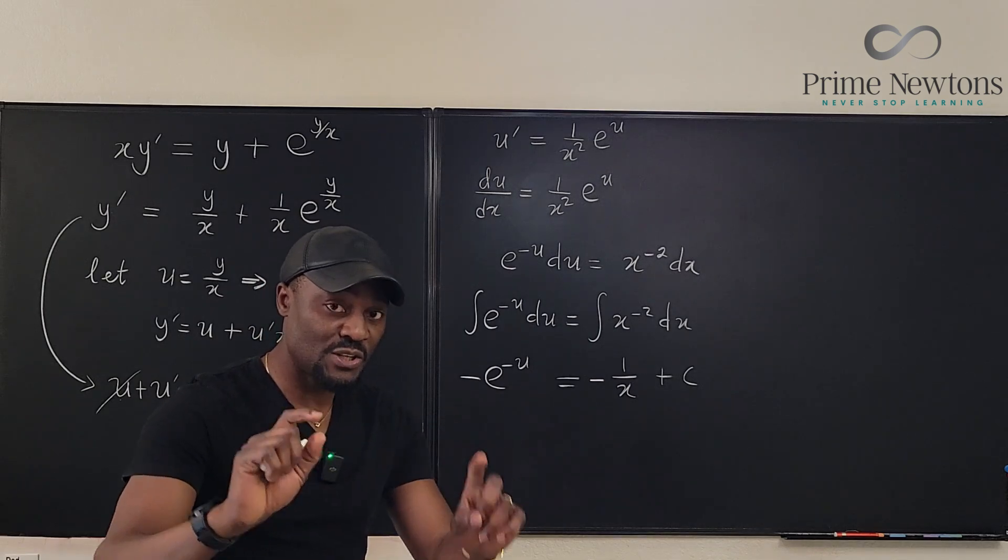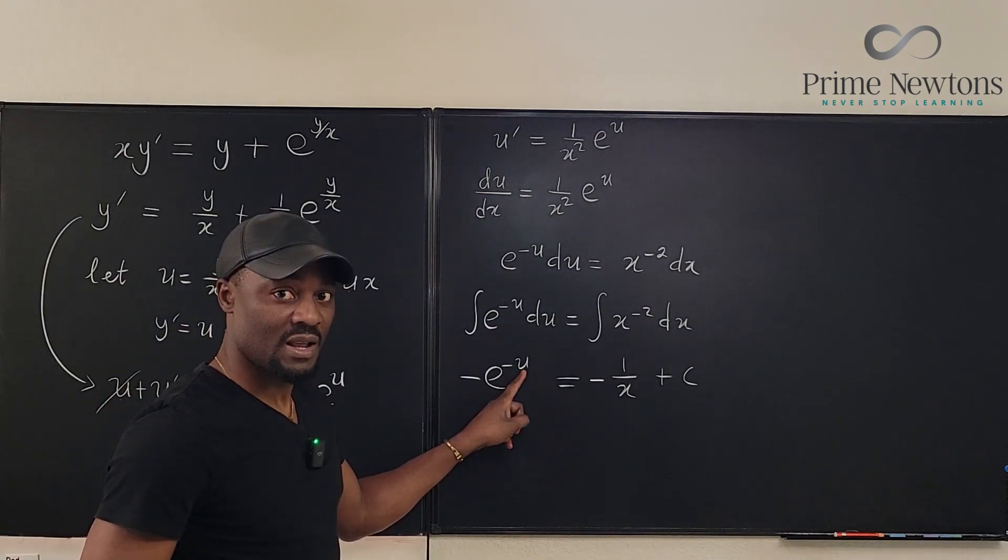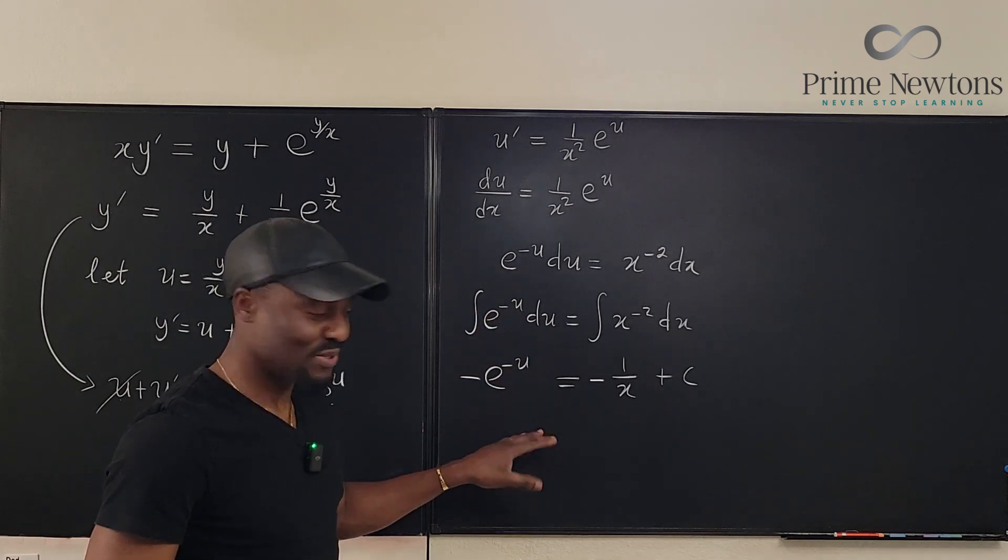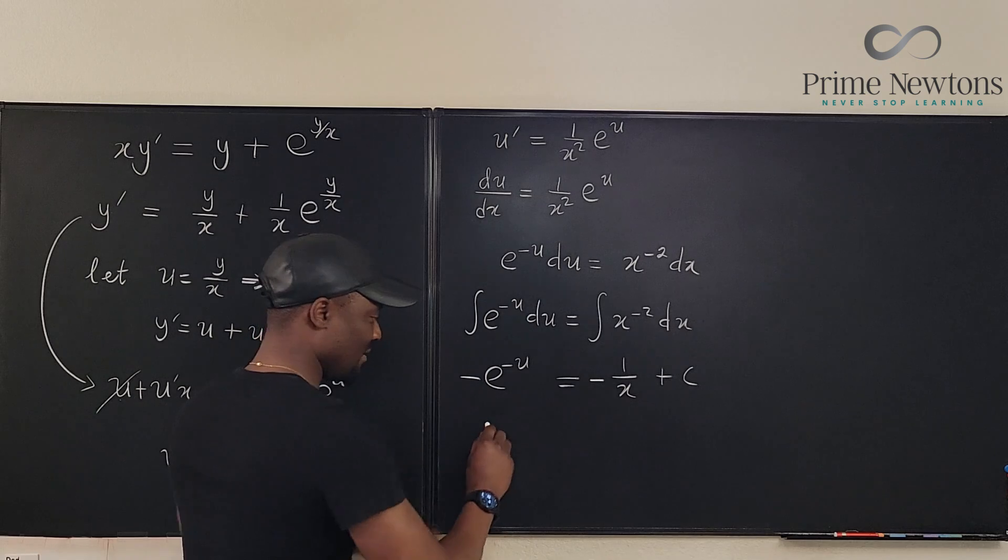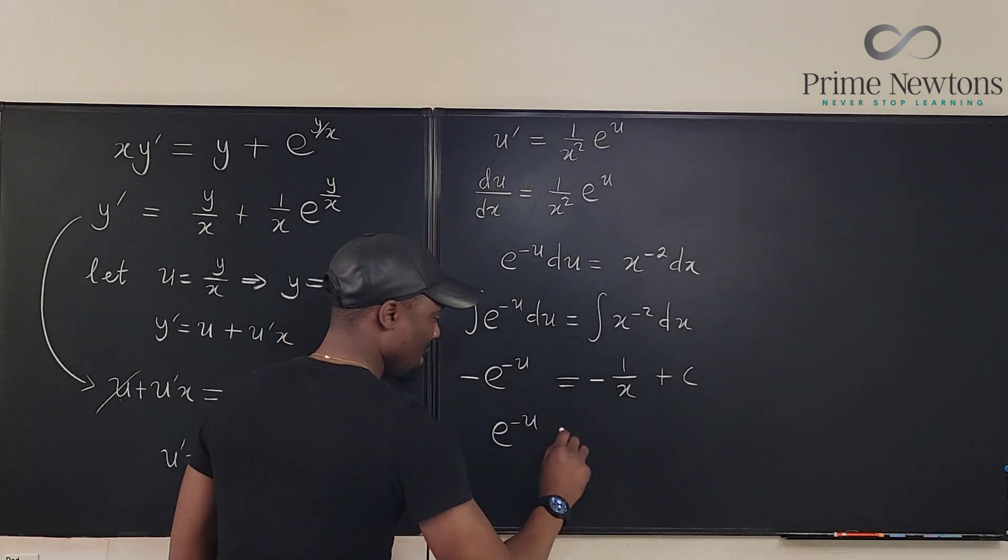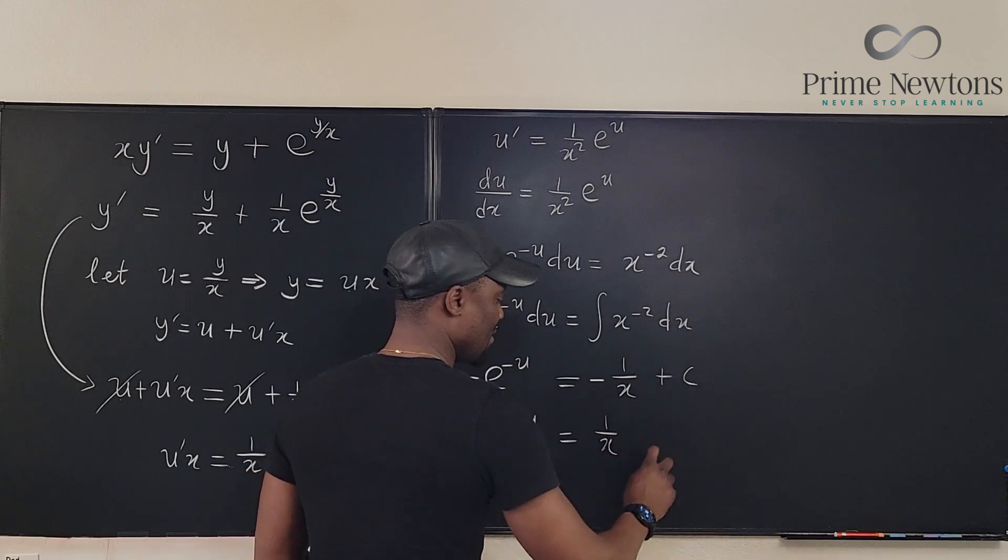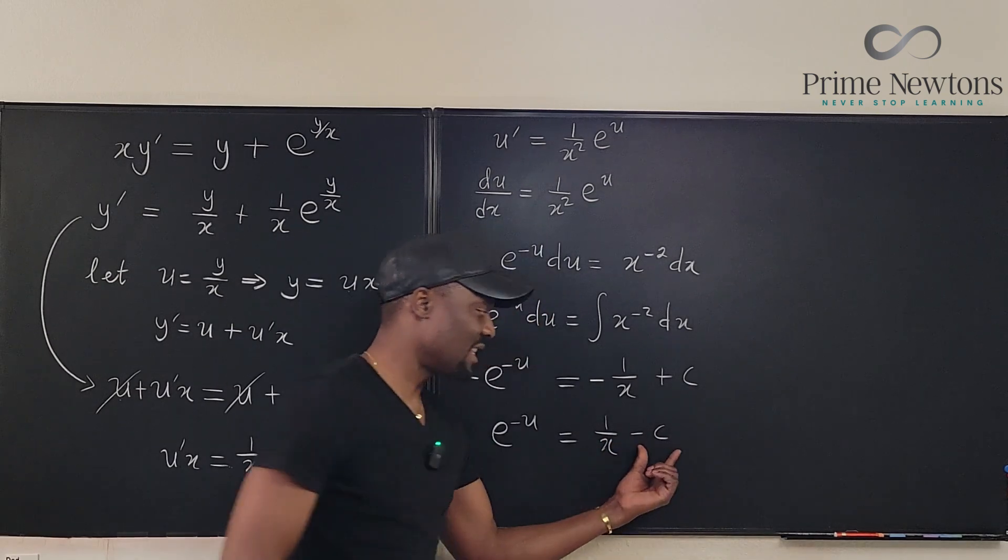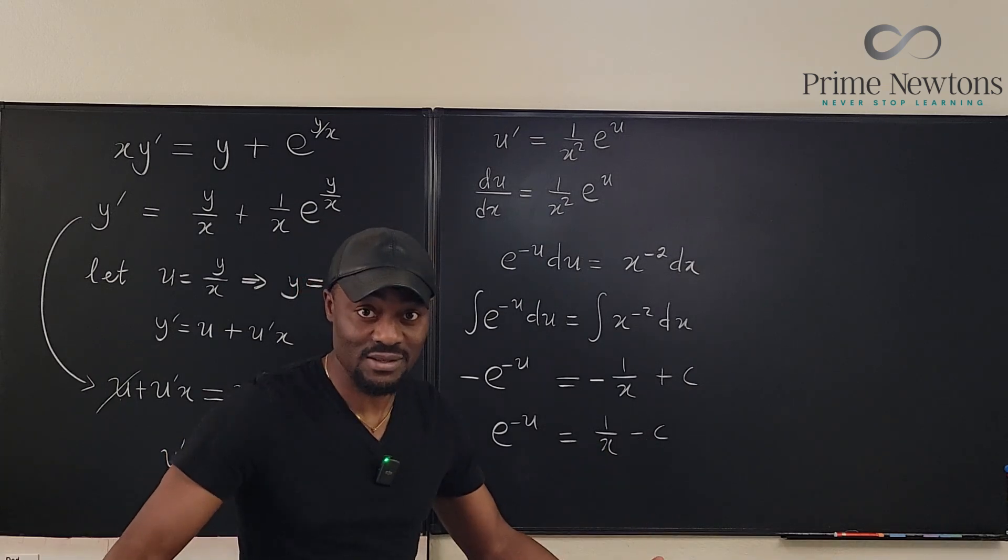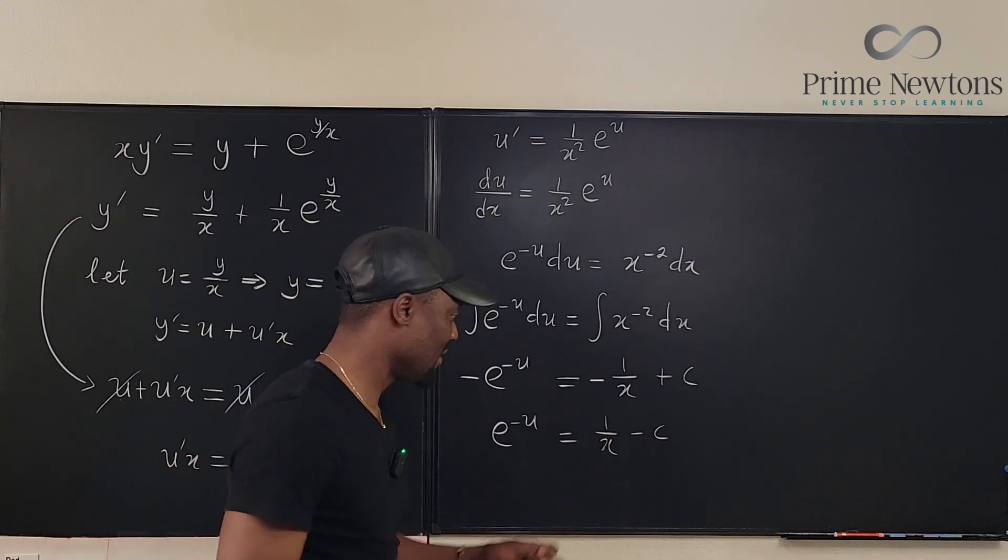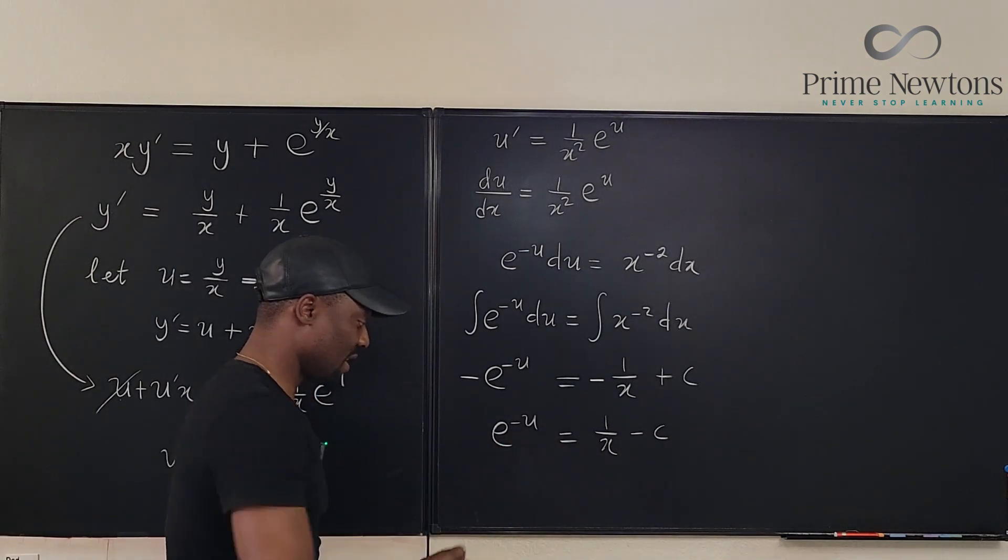So remember the mission is to find u itself. This is the guy we're looking for. Right now this is the mission. So to find u we're going to multiply everything by negative so we have e to the negative u equals this becomes a plus, also 1 over x and this becomes minus c. Again this doesn't matter whether it's plus c or minus c, it doesn't matter what you put here because it's a constant you can always change the sign on it.